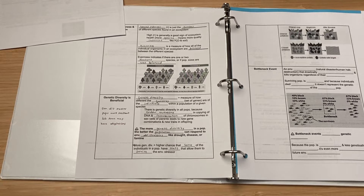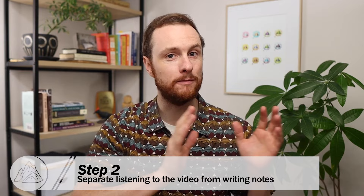The second step to taking really effective notes in AP Environmental Science is to separate watching the video from taking the notes. That means just listening to the videos without writing anything down and then pausing at the end of each section to take notes.